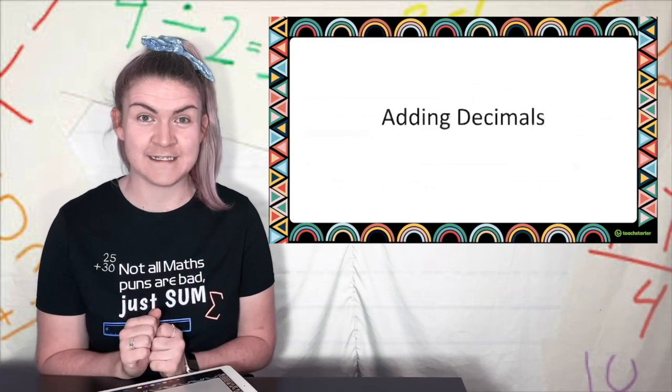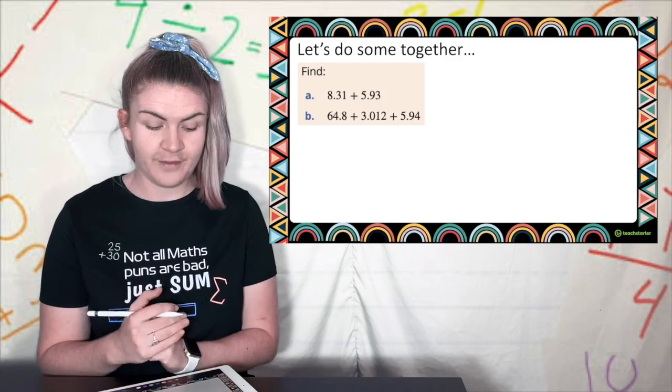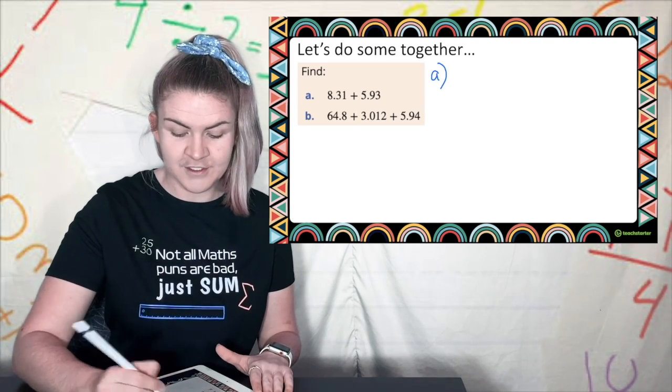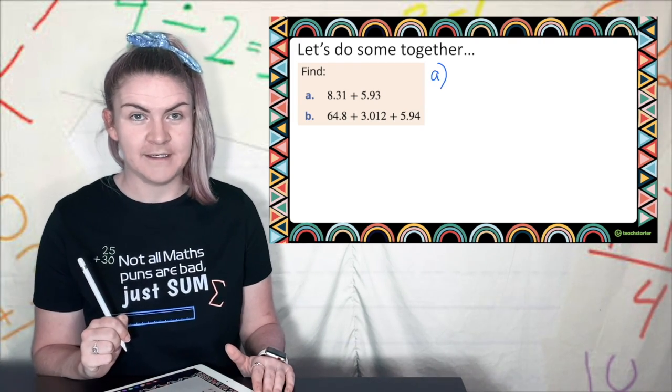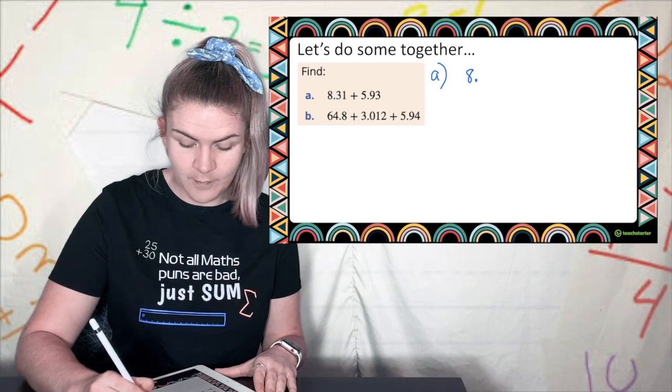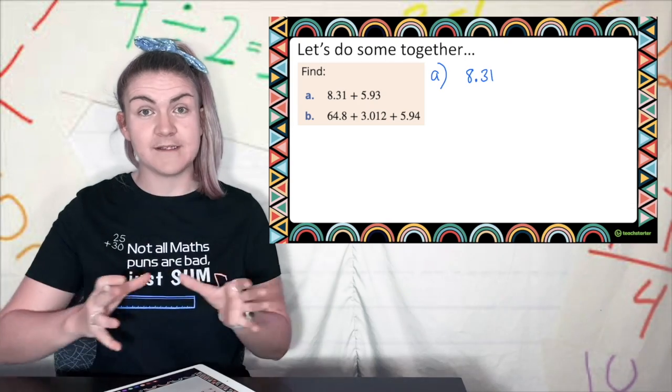Let's practice adding decimals. Here I have 8.31 plus 5.93 so I'm going to write out my question and I'm going to line up my decimals. I like to write it kind of in the center of my page 8.31 which just gives me space around either side.